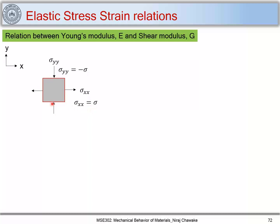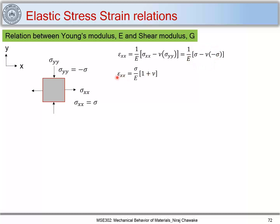Now let us find out what strains are developed for this element. We find epsilon_xx, the normal strain along the x direction, using the stress-strain relation: epsilon_xx = (1/E)(sigma_xx - mu * sigma_yy), since sigma_zz = 0. Substituting sigma_xx = sigma and sigma_yy = -sigma, we get epsilon_xx = (sigma/E)(1 + mu).